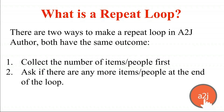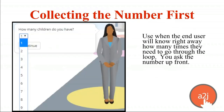There are two ways in A to J to do a repeat loop, and they both have the same outcome. You can either collect the number first — the user tells you how many times they need to go through the loop — or you can ask if there are any more items to add at the end of the loop. The first method, collecting the number first, is used when the end user is likely to know right away how many times they need to go through the loop, so you ask them for the number up front and gather that value in a variable.